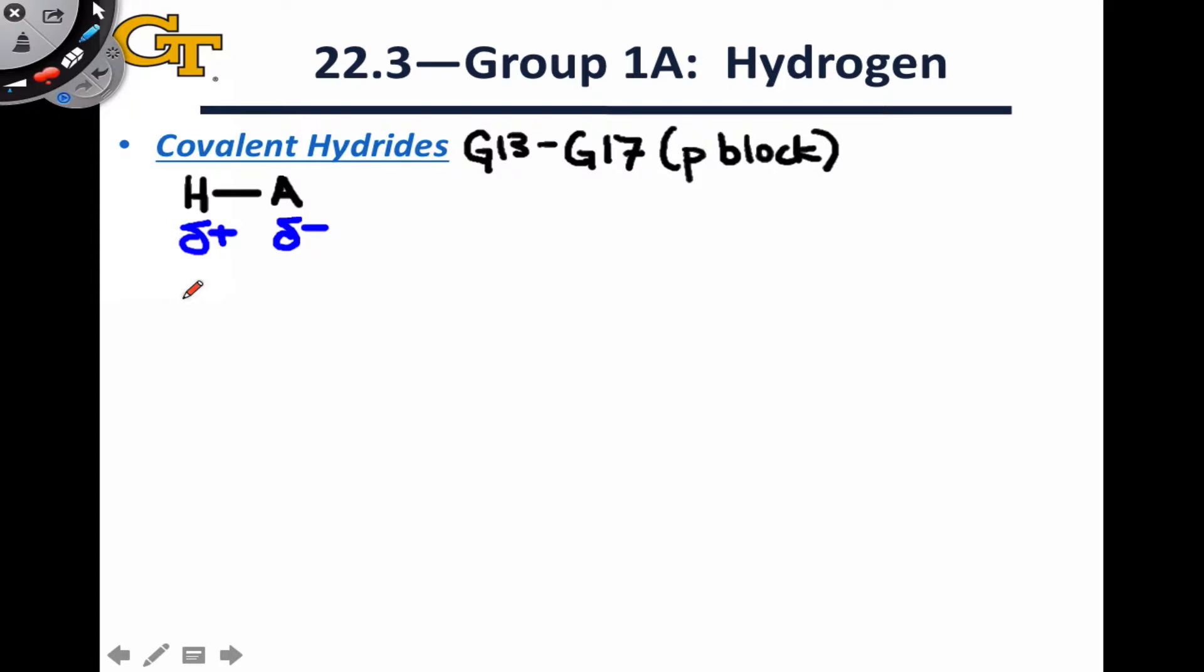Contrast this with the ionic hydride situation, in which the hydrogen atom was, in some cases, fully, formally negatively charged, while the metal cation was positive. Here, the electron density distribution is flipped, in a sense. Examples of the covalent hydrides in the P block include compounds like BH3, which actually dimerizes spontaneously to form B2H6, CH4 methane, NH3 ammonia, H2O water. These are some of the most familiar compounds from everyday life. The non-metal covalent hydrides are extremely common.